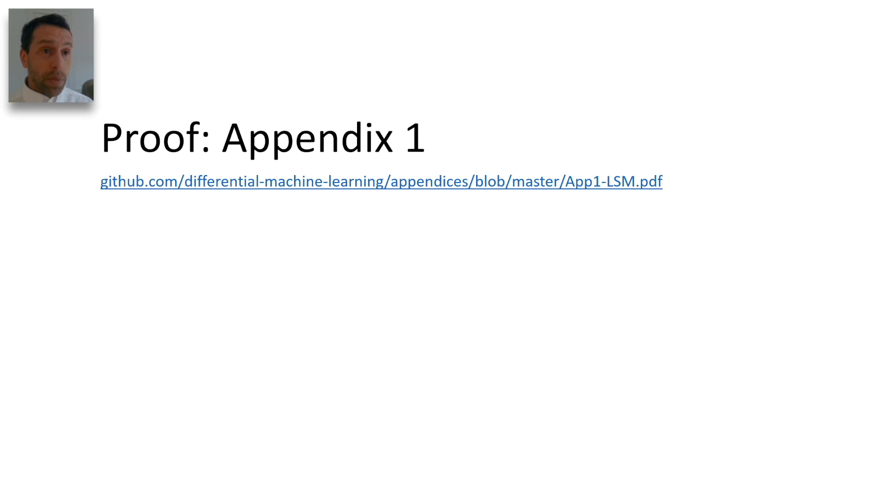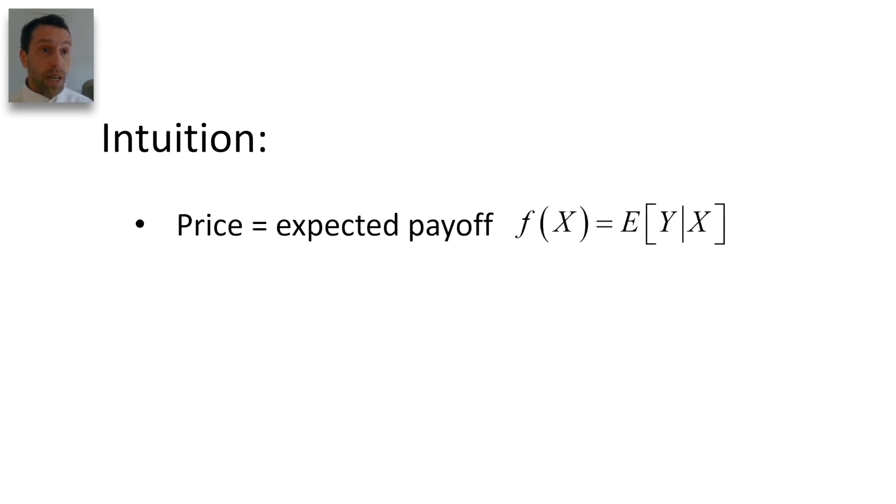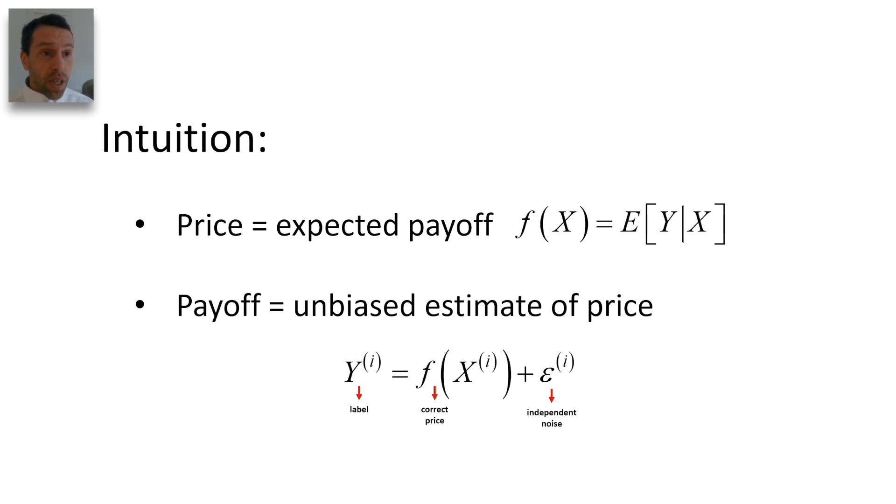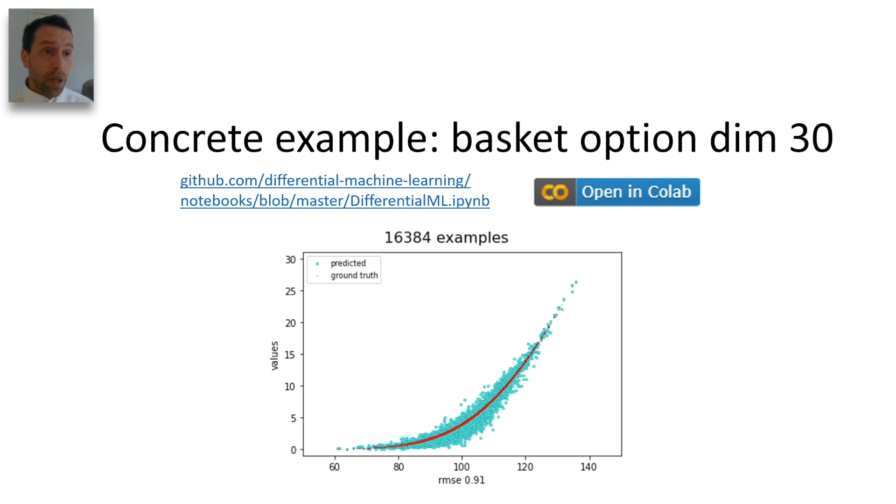Proof is given in Appendix 1 on GitHub, the intuition being that the true price is the expectation of the payoff, hence payoffs are unbiased estimates of prices with independent noise. Looking at the 30 stock basket option example for the demonstration TensorFlow notebook on GitHub,